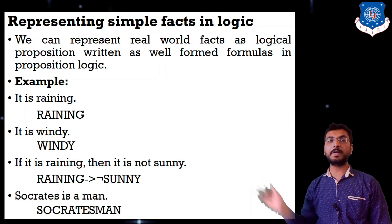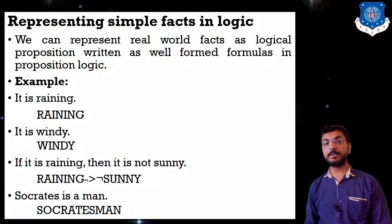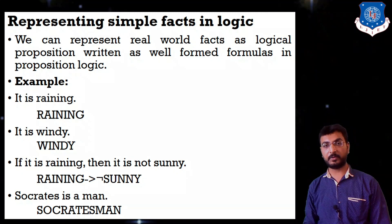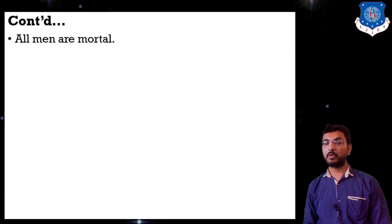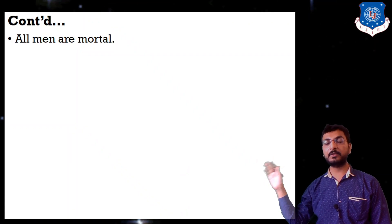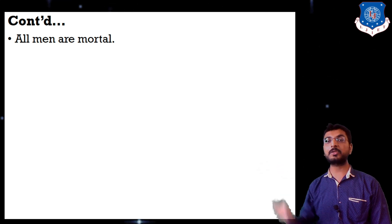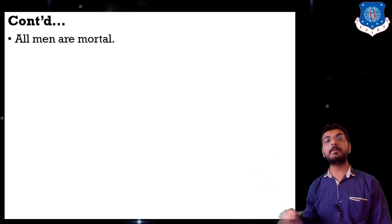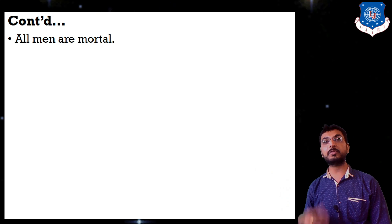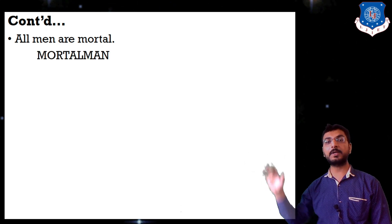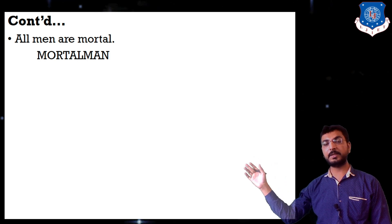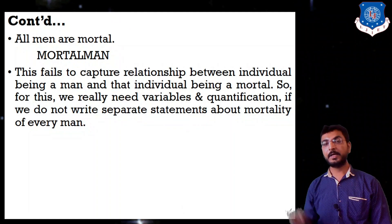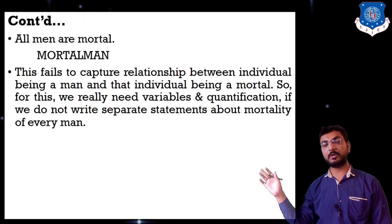Next, 'Socrates is a man' can be represented as SOCRATES_MAN. This is the proposition logic representation. One more sentence involves the universal quantifier: 'all men are mortal.' How we represent 'all' — that can be represented by MORTAL_MEN. This is the proposition logic representation for 'all men are mortal.'